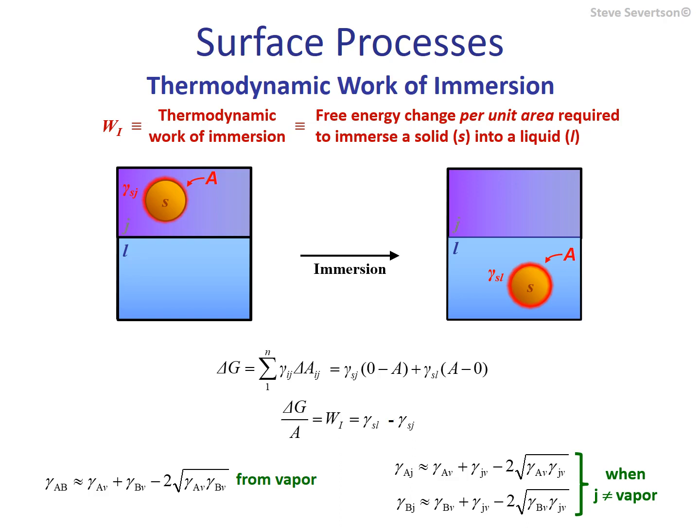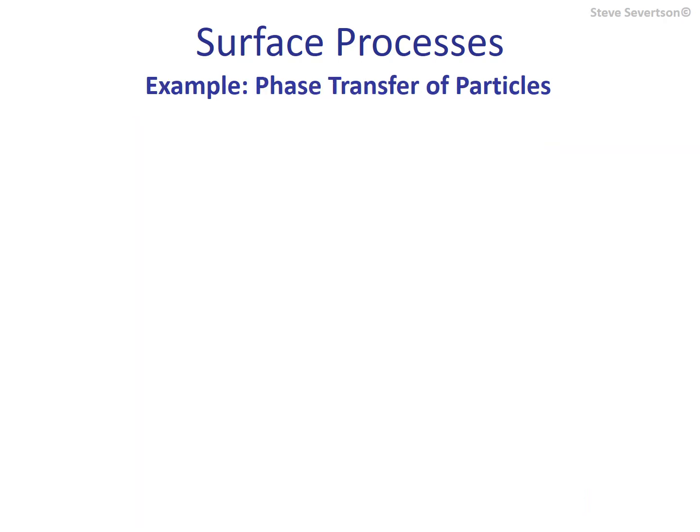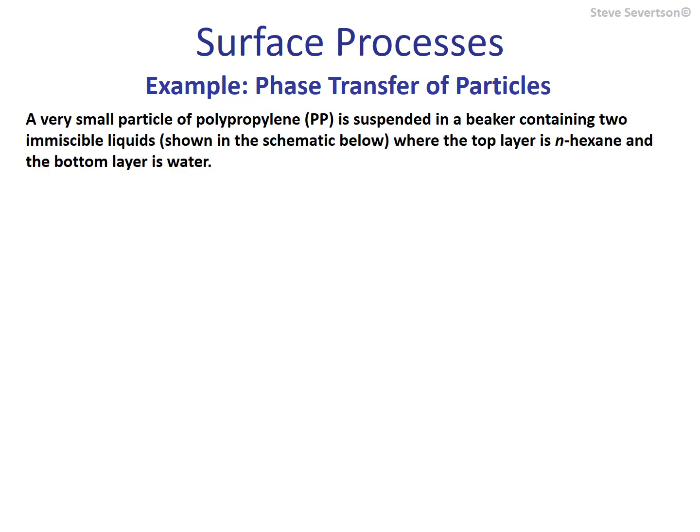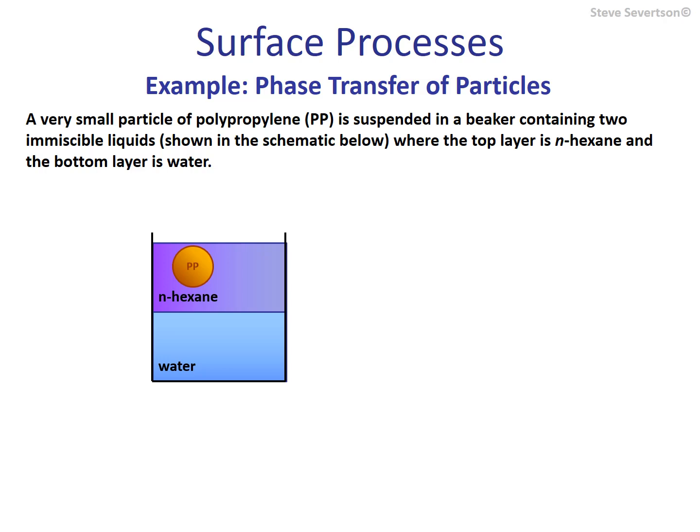This slide reviews an example where we estimate the thermodynamic work of immersion for the transfer of a small polymer particle between two immiscible organic liquids. A very small particle of polypropylene is suspended in a beaker containing two immiscible phases — the top layer composed of hexane and the bottom layer composed of water. The first part of the example asks us to derive a formula for the thermodynamic work of immersion for this transfer process in terms of the polar and dispersive components for the solid and liquid phases.